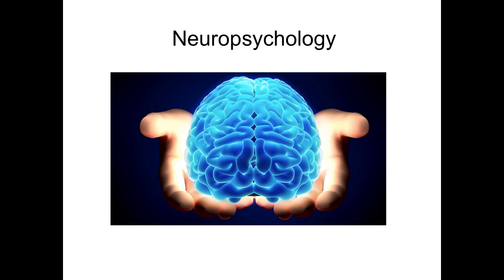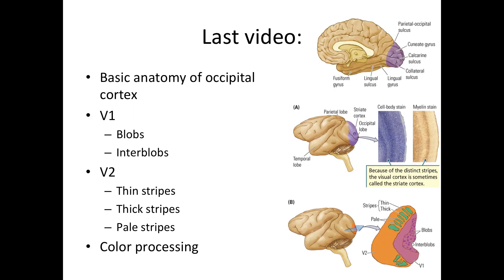Hi everyone and welcome back to neuropsychology. In the last video we talked about the basic anatomy of the occipital cortex. We mainly went over the medial side and talked about the calcarine sulcus and the parietal occipital sulcus, then we dove a little deeper into the visual cortices. We talked about V1 or the primary visual cortex, where we have blobs and interblobs, and then V2 where we have the thin, thick and pale stripes, and lastly we talked about color processing.